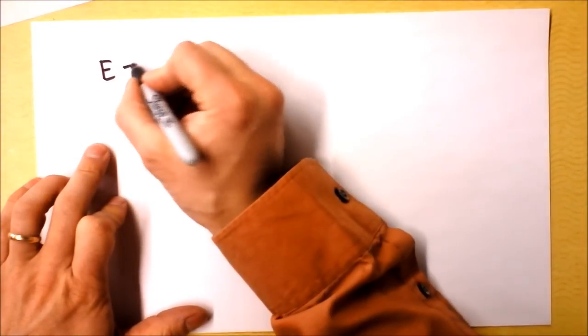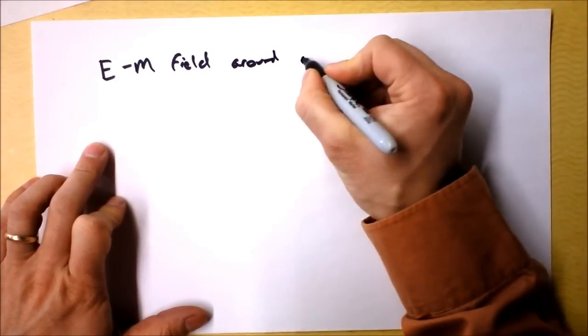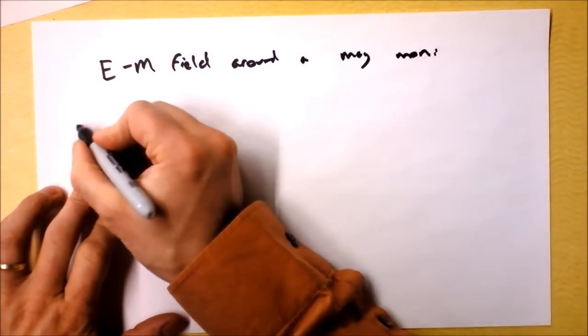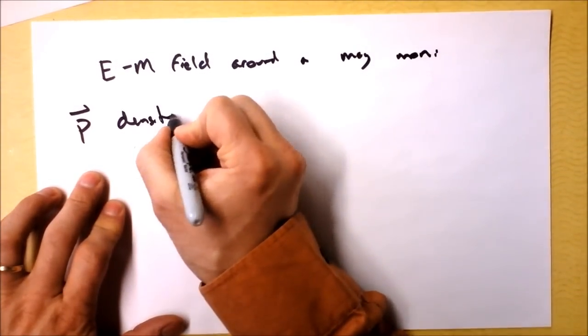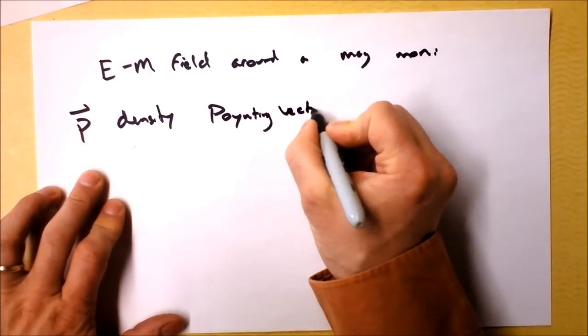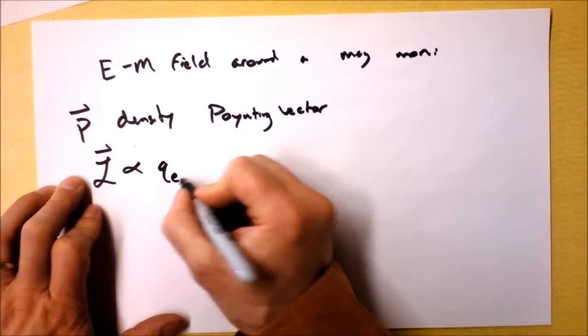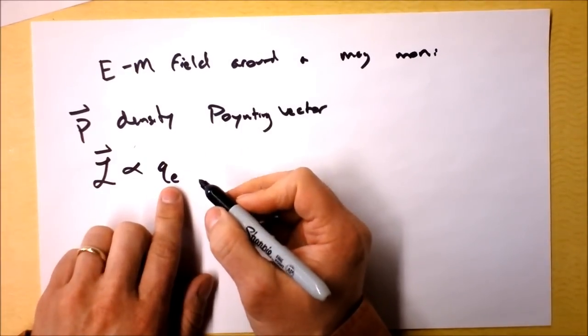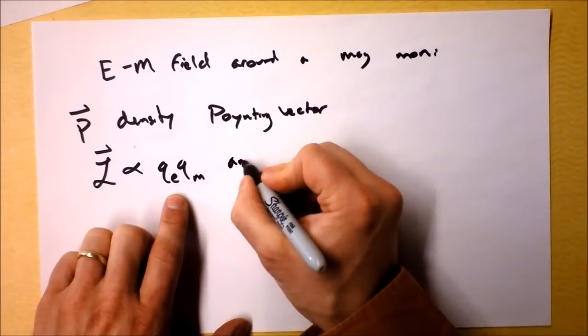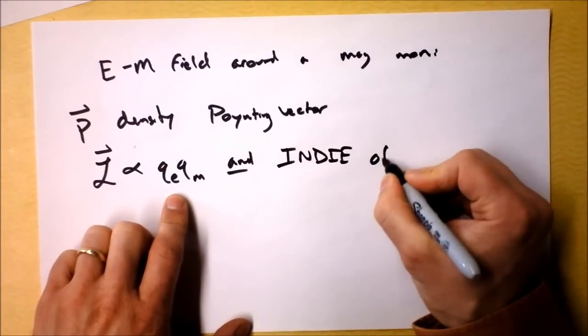But here's the argument presented by Wikipedia. Wikipedia says there's an electromagnetic field around a magnetic monopole, right? And classically, we have momentum density from a Poynting vector, right? And we have total angular momentum, which is proportional to the charge of the electron and the charge of the magnetic monopole. And independent, oh, this is a big deal, and independent of separation.